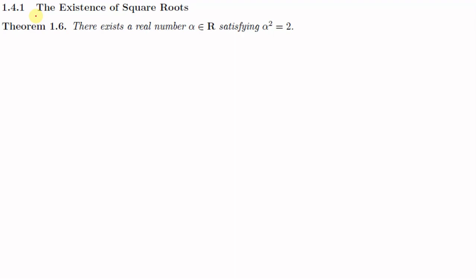Here we have subsection 1.4.1: the existence of square roots. We have a theorem which states that there exists a real number alpha, element of ℝ, satisfying alpha squared equal to 2. This indirectly says that root 2 exists and it is a real number.